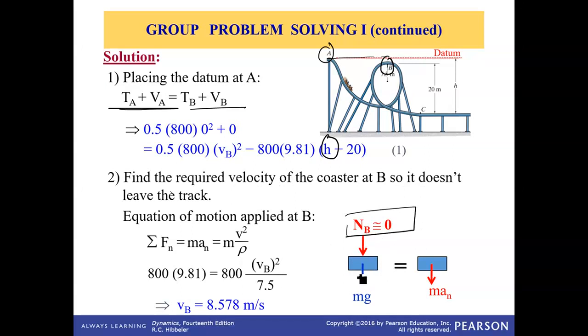And we apply the normal tangent coordinate system at B. So if this is the situation at B here, then we define tangential axis in this direction and normal axis in this direction and draw the free body diagram and corresponding kinetic diagram. So this is FBD and this is corresponding kinetic diagram.